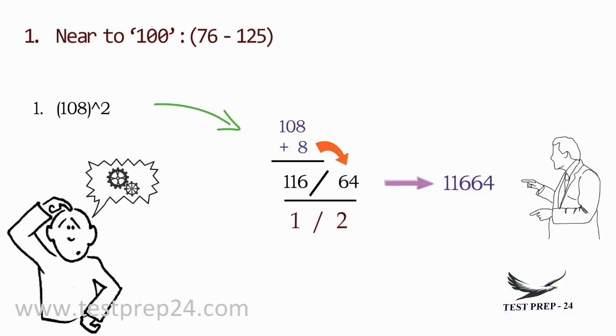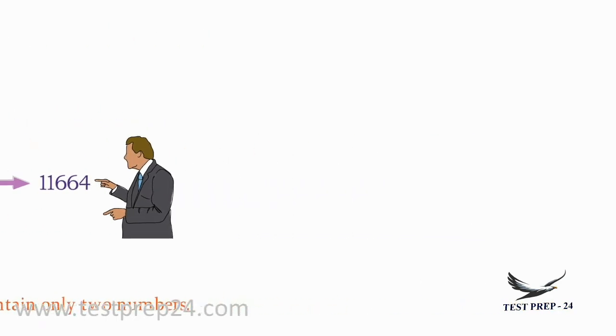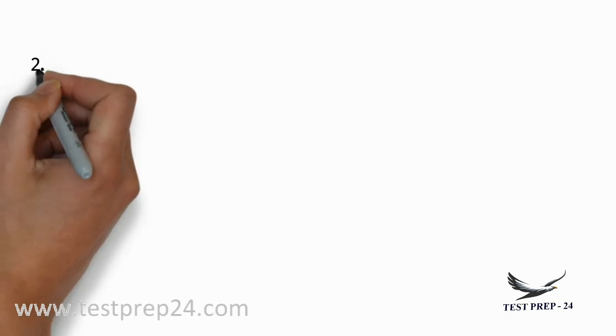So your answer will be 11664. Keep a small note in your mind that your second part should contain only two numbers. If you get an extra number, add it to the previous value. If you only get a single number, add 0 to the second value, which we can see in the next example.